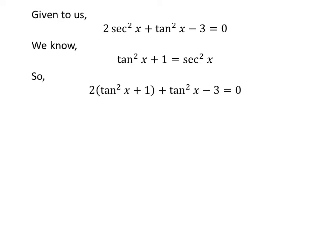Application of the above identity gives us 2 times (square of tangent of x plus 1) plus square of tangent of x minus 3 is equal to 0.